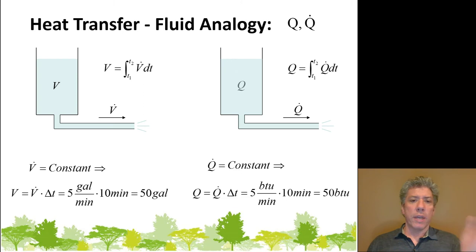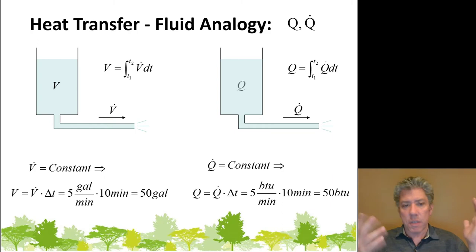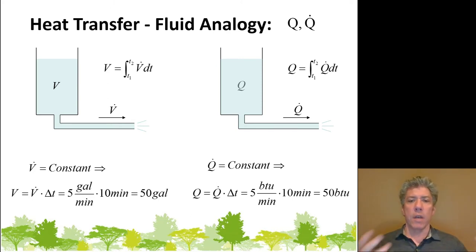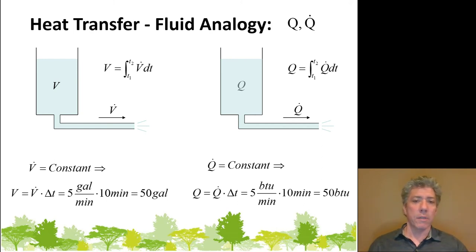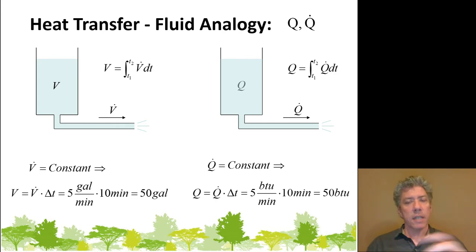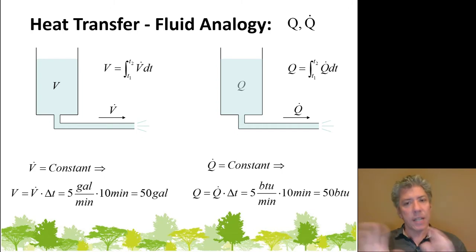If the volumetric flow rate is constant at five gallons per minute and we let it flow for ten minutes, it's easy: five gallons per minute times ten minutes equals 50 gallons — the tank lost 50 gallons. We can do the same thing with heat. It's not as if the system contains heat like the tank contains fluid — it contains energy that is transferred and flows out as heat — but the analogy holds.